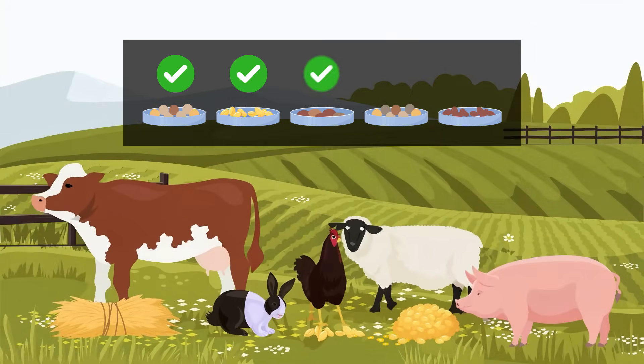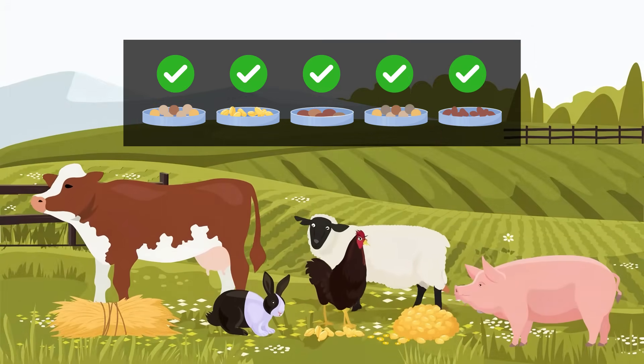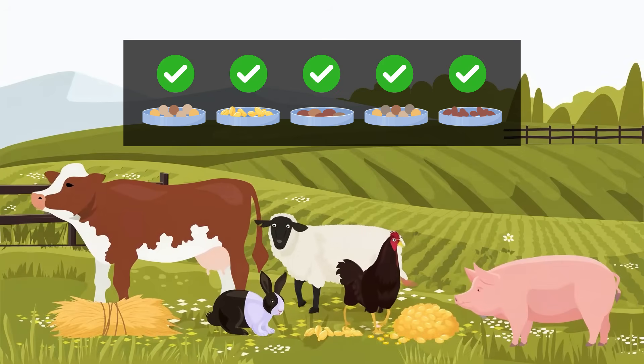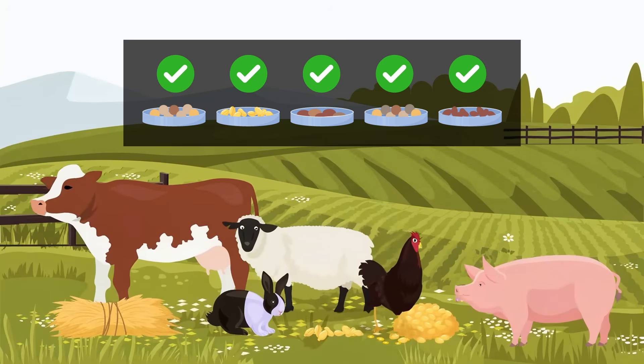Furthermore, the method proved reliable across five common types of livestock feed: for cows, pigs, sheep, poultry, and rabbits.